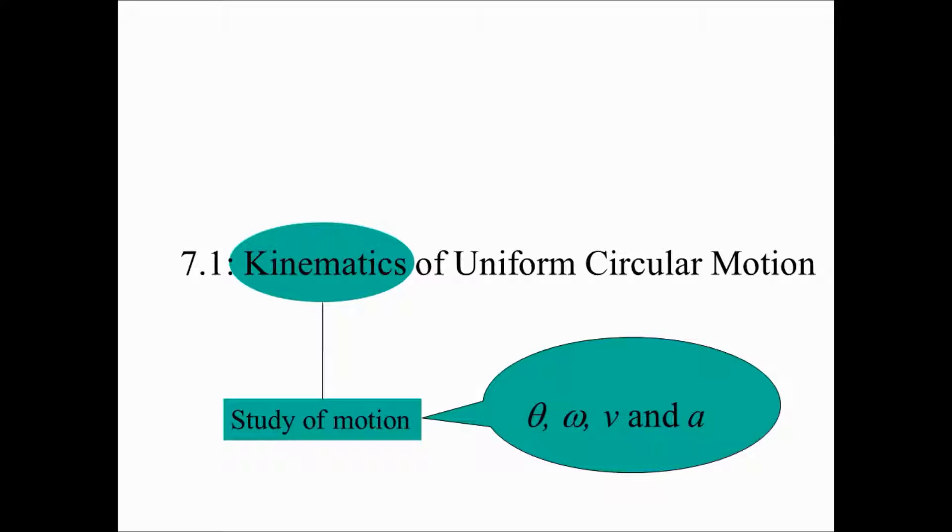We describe uniform circular motion in terms of theta which is the angular displacement, omega which is the angular velocity, V the linear velocity, and A the acceleration.